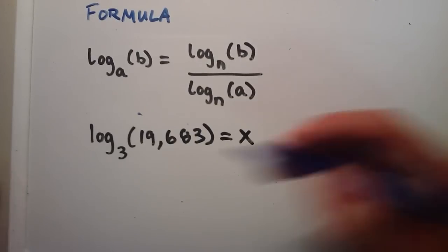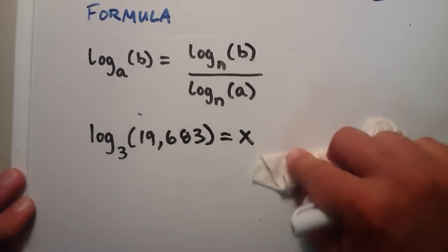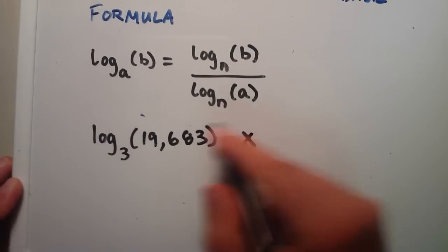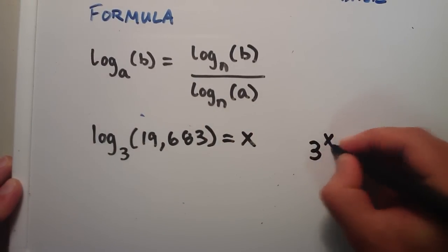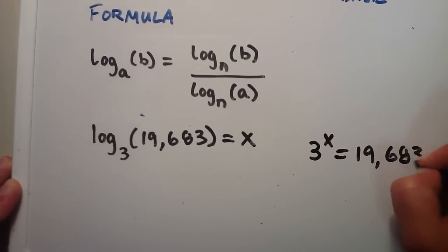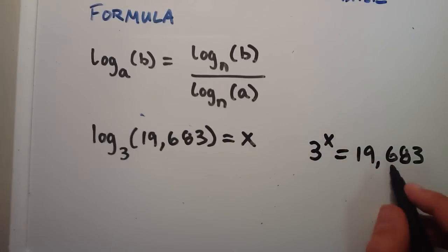My marker is running out here. Let's use the black one. So 3 raised to the x power equals some number. So I'm just going to write that down. 3 to the x power equals 19,683. So what does x equal to make this statement true? So this is a lot harder to figure out.